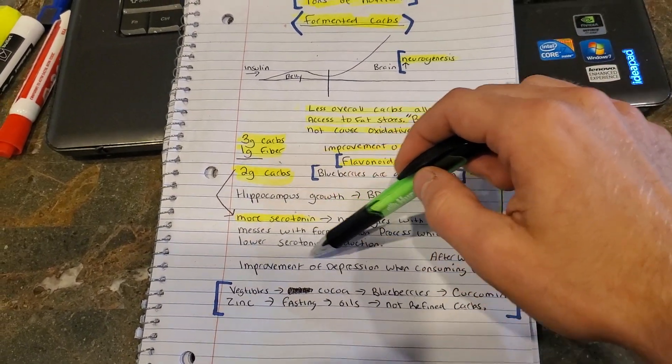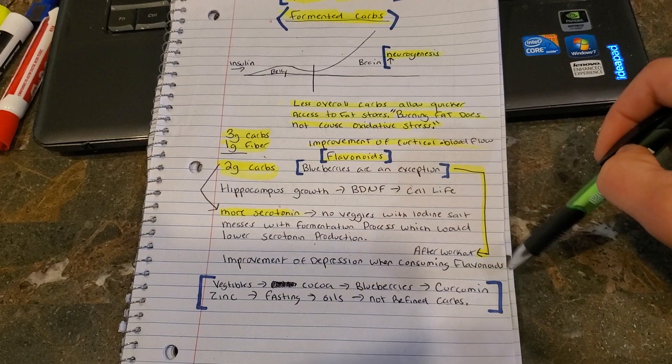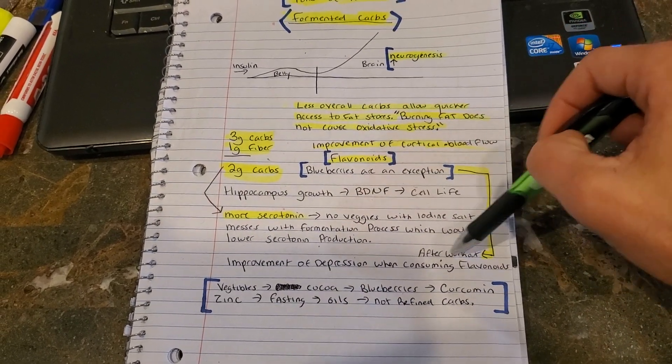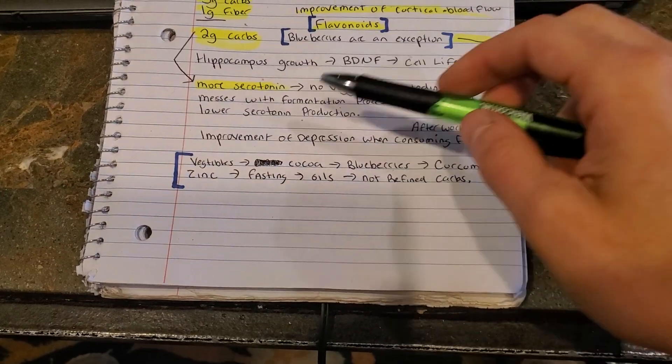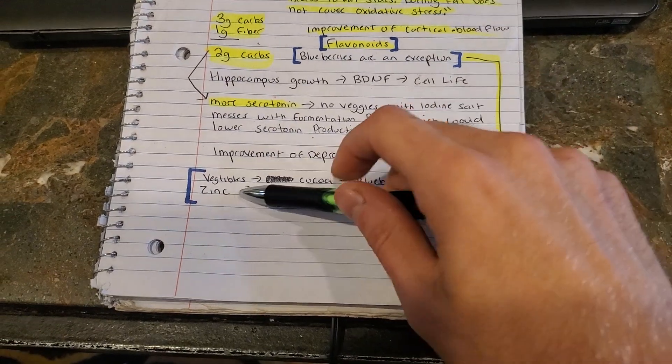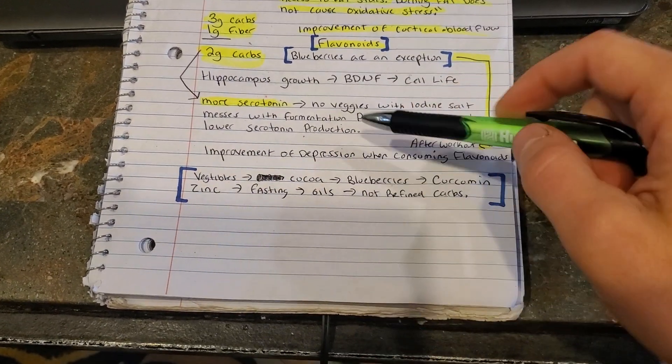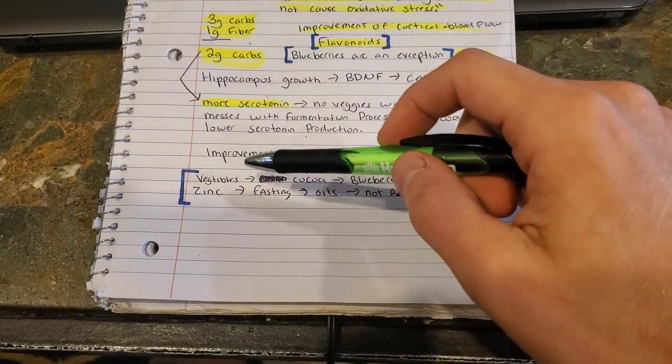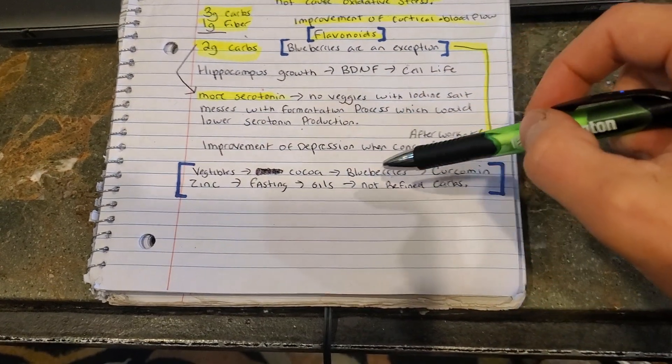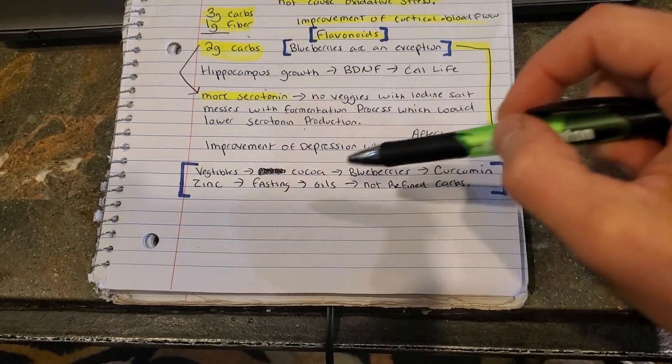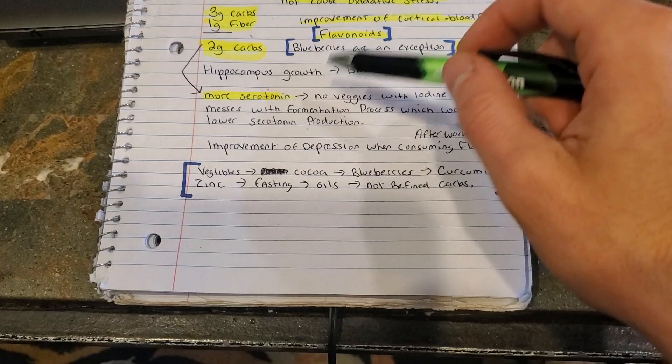So more serotonin production. No veggies with iodine salt. When you eat it with this, it messes with the fermentation process in your stomach, which is bad. So blueberries are an exception. They're amazing. I eat these. They pass your blood-brain barrier. They're very nutritious for you. So overall, improvement of depression when consuming flavonoids, and if you have these when you work out, they travel your glute 5 receptor. Here's an example of some really good foods that have flavonoids in them. Vegetables, cocoa, blueberries, cumin, zinc, fasting, oils, non-refined carbohydrates.